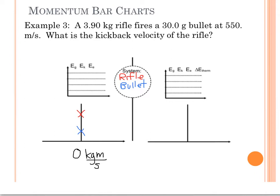Afterwards, we know that the bullet is moving at a velocity of 550 meters per second.